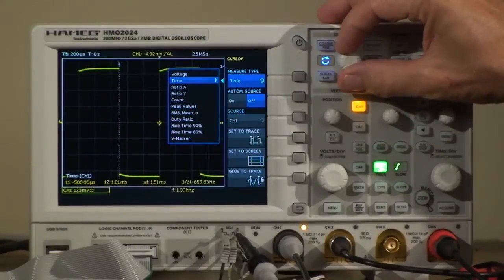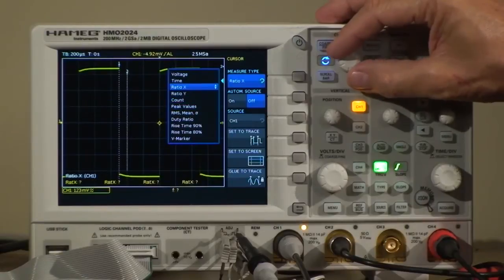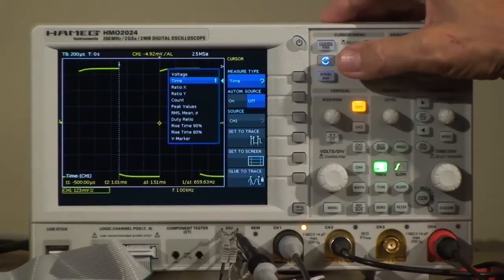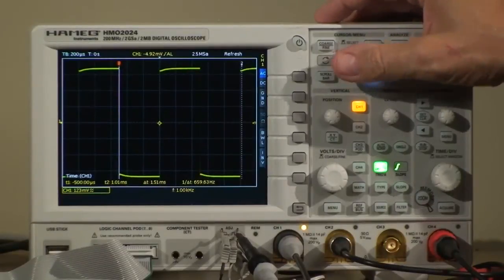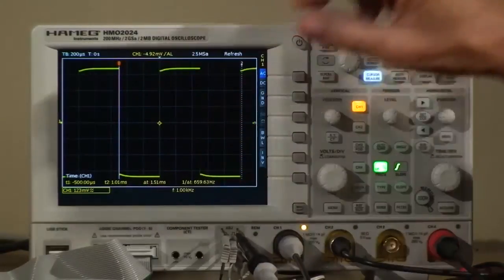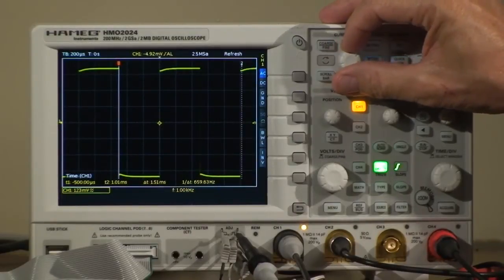They are now set to measure time, but you can see we can give them all kinds of functions. Select time, press this button, and now I have the possibility of moving this cursor back and forth. I want to put it on the falling edge of that square.